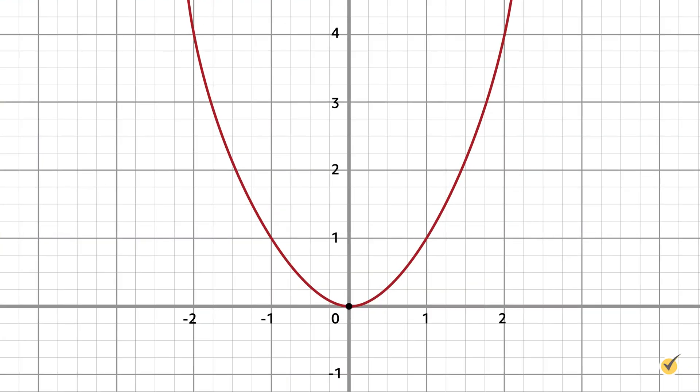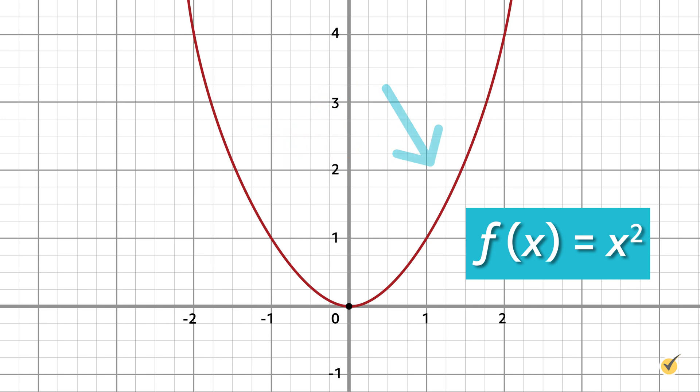One example of an even function is f equals x squared. Notice that the shape of this familiar parabola is visibly symmetric. The left and right sides of the plane are identical, just flipped.